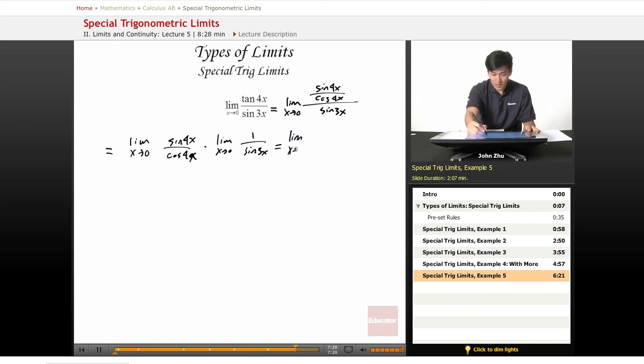Let's rewrite it as limit as x approaches 0, 1 over cosine of 4x times limit as x approaches 0, sine of 4x over sine of 3x.